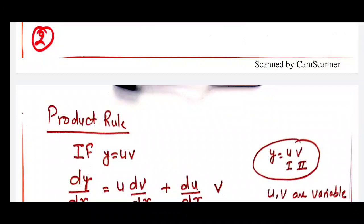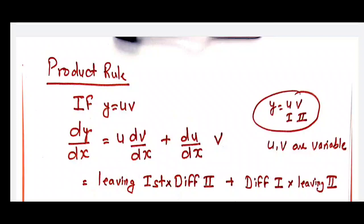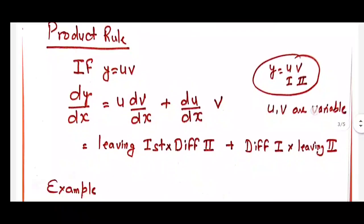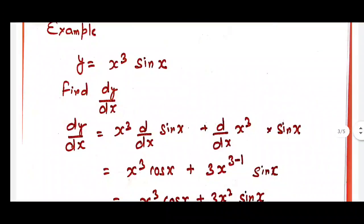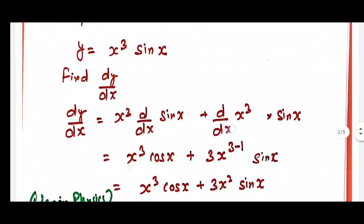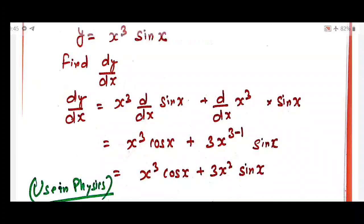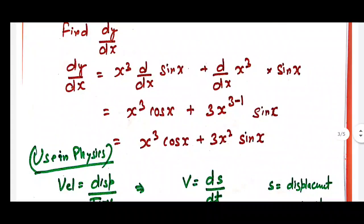Now the product rule, which is also utilized in physics. If y equals u times v — a product of two variables — and you want to differentiate y, then: dy/dx equals u times dv/dx plus du/dx times v. That means: leave the first and differentiate the second, plus differentiate the first and leave the second. Quick example: if y equals x cubed times sin x, then leaving x cubed and differentiating sin x gives cos x, and differentiating x cubed and leaving sin x gives 3x squared. So dy/dx equals x cubed cos x plus 3x squared sin x.